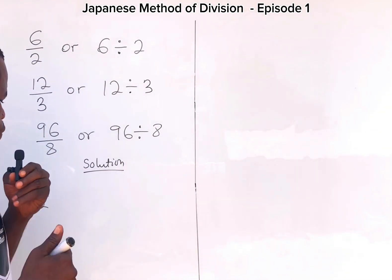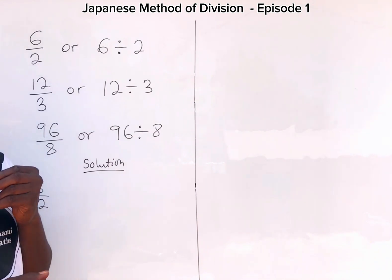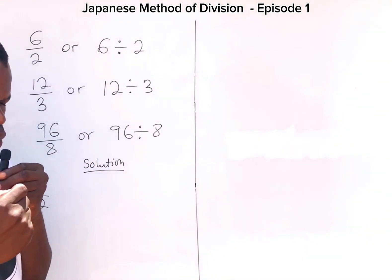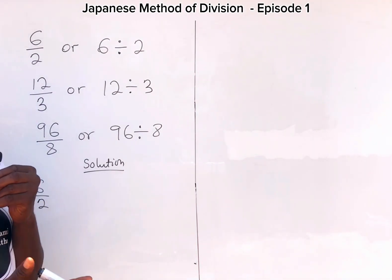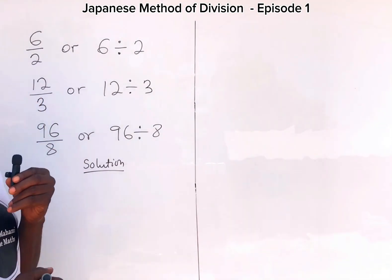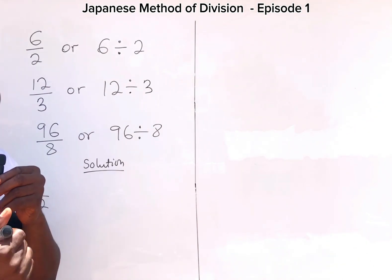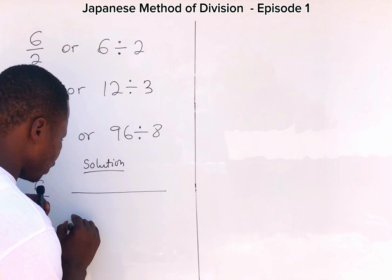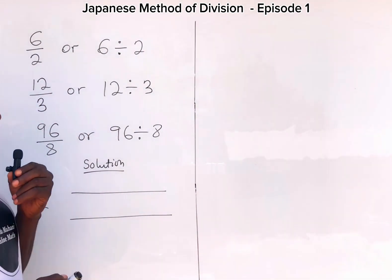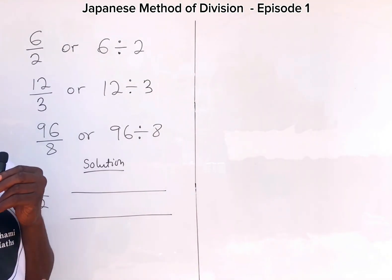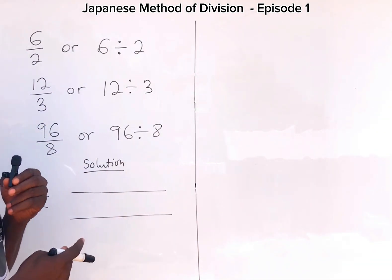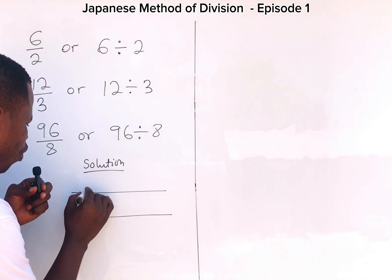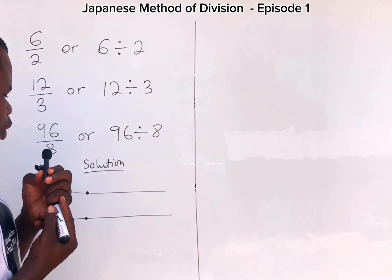To use the Japanese method of division to divide six over two, the denominator is represented by horizontal lines, and we use dots to represent the numerator. To solve six divided by two, you start by drawing lines for the denominator. The value is two, so you draw two horizontal lines. Then you move to the numerator, which is six, meaning you need to locate six dots within these two lines. The location of the dots follows a pattern — you start locating your first point, then the second point in vertical form.